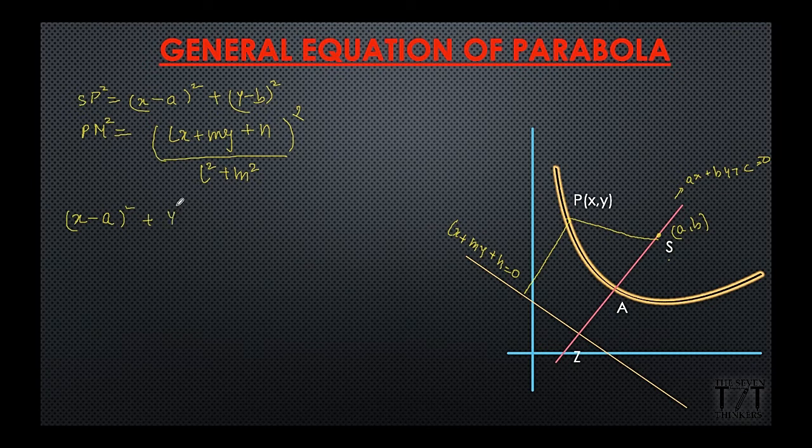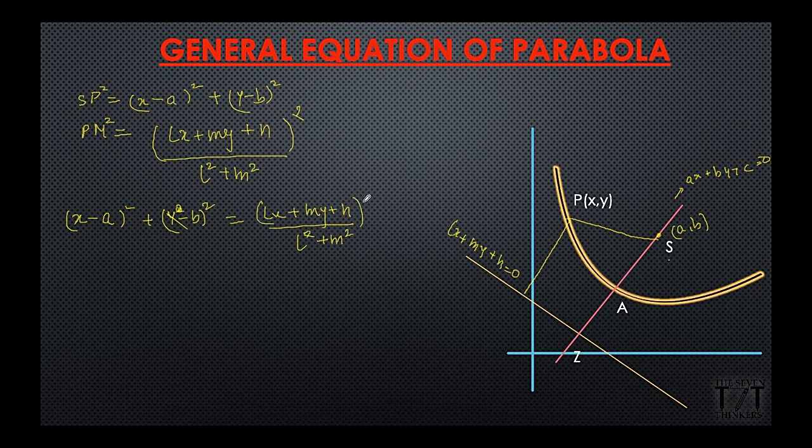Now since sp is equal to pm, so squaring will also be equal and similarly we'll have x minus a whole square plus y minus b whole square is equal to lx plus my plus n upon l square plus m square and this whole square. So we have equated both.